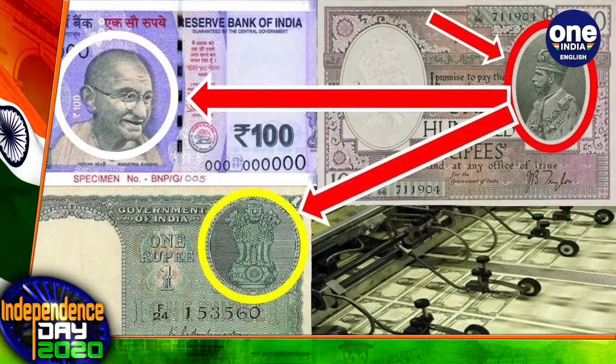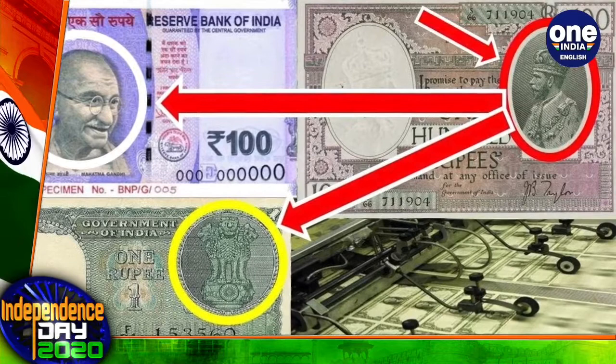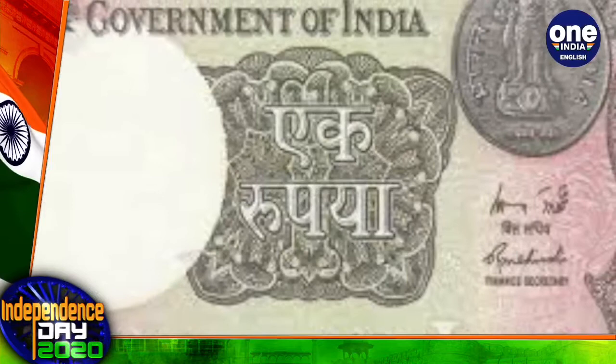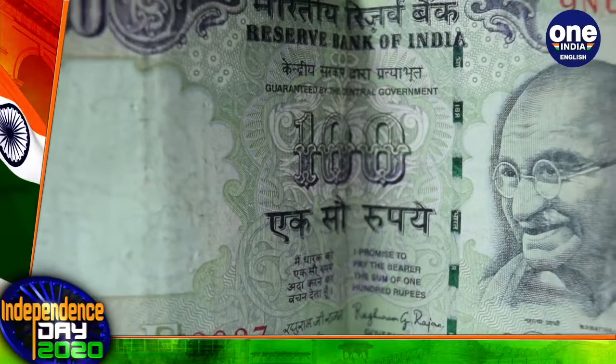Before Gandhi's portrait, many designs and images were used on the currency notes. In 1949, the then-government brought out a new design of the Rs 1 note with the Ashoka Pillar. In 1953, Hindi was displayed prominently on the new notes.